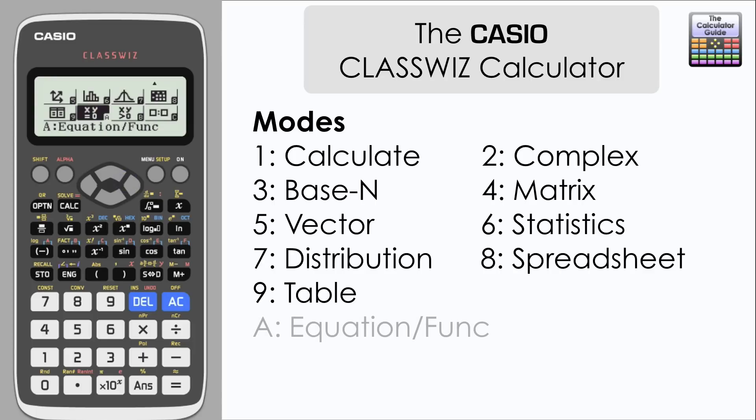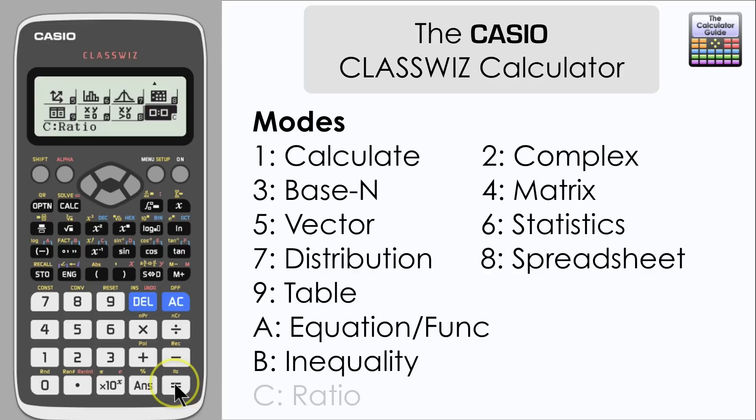Then we move into a lettered mode. So we've got mode A here. Equation and function. Well it's a solver for simultaneous equations, linear simultaneous equations. And also a polynomial solver as well. So for X cubed, X squared. I think there's X to the power 4 as well. Inequality is very similar but related to inequalities. And then finally we have another new mode here. A ratio mode.